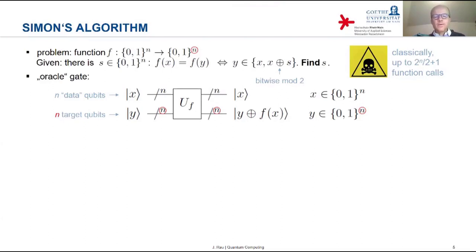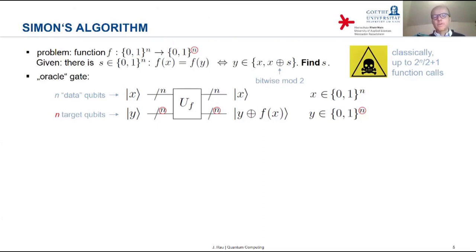We have the slash-n also on the lower wire, and the state y of the target qubits is also an n-qubit state. The action of the oracle is completely analogous to the Deutsch-Jozsa case: if x and y are basis states, the oracle adds to y the value of the function evaluated for x. Both y and f(x) are bit strings of length n, and we do this addition bitwise mod 2.